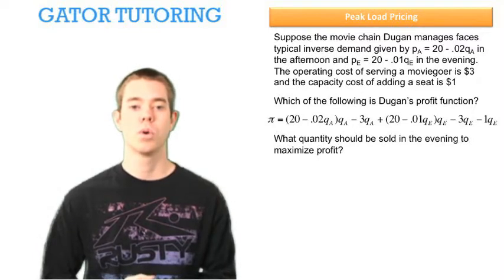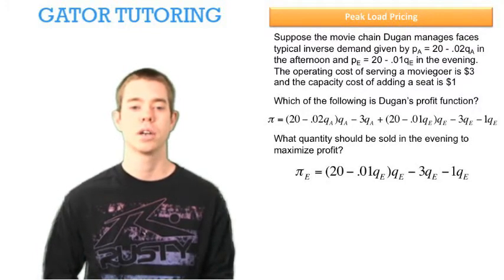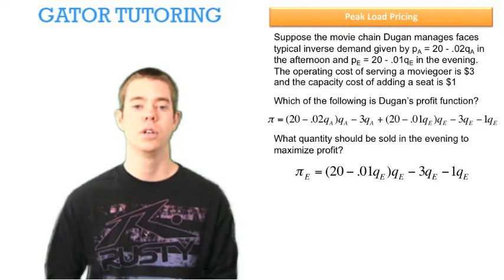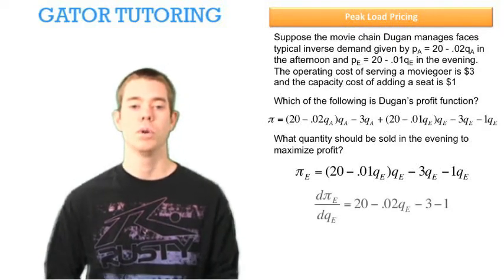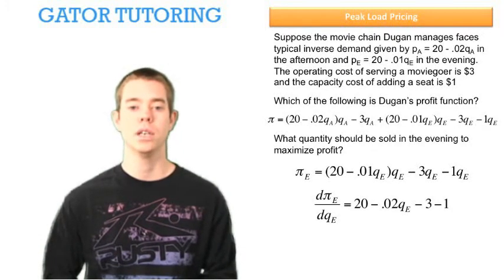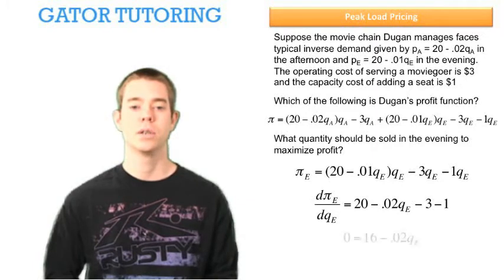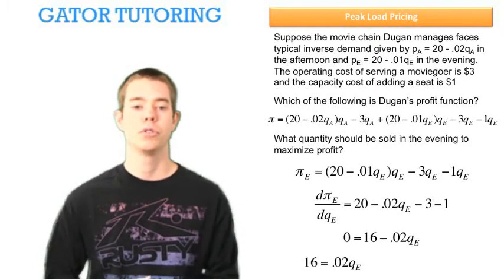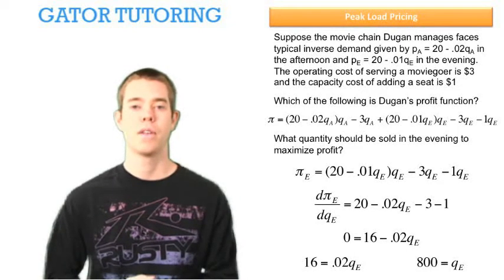So the next question says, what quantity should be sold in the evening to maximize profit? Well, here we're going to take our profit function of the evening by itself. We don't really need the profit function of the afternoon included here. We take the derivative with respect to QE and set this equal to 0, do some algebra, add 0.02 to each side QE, and divide through by 0.02, and we find that the quantity sold in the evening should be 800.